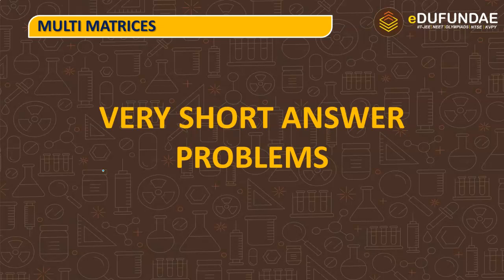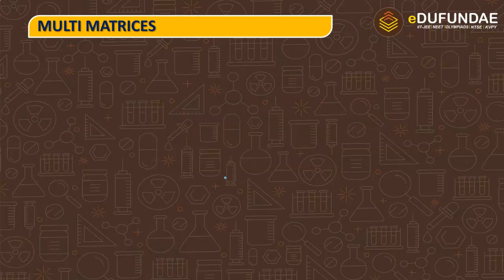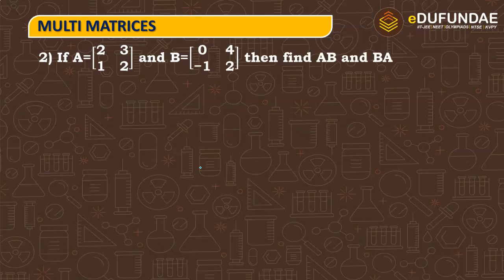This session is based on very short answer type problems related to matrices. So first question is, if A is equal to 2 x 2 matrix is given to us, entries are 2, 3, 1, 2 and B is, again it's a 2 x 2 matrix, matrix with entries 0, 4, minus 1 and 2. Then find AB and BA.